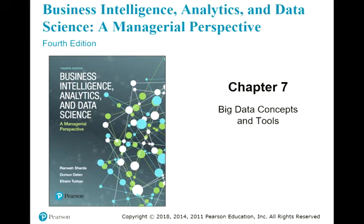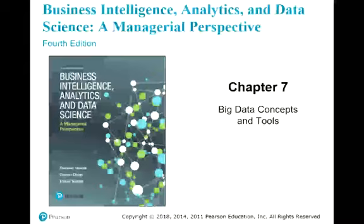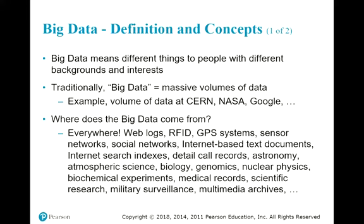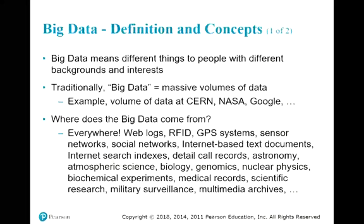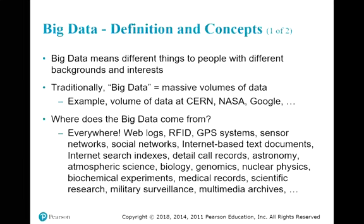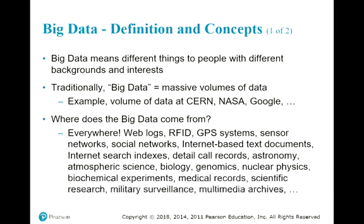This is a summary of chapter number seven from your textbook. The main topic of the chapter is about big data. Big data is an interesting terminology — easy to understand in a way, but also confusing because many different people refer to big data as a different concept.